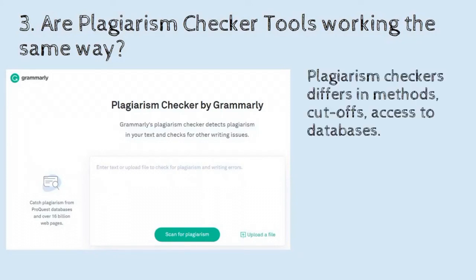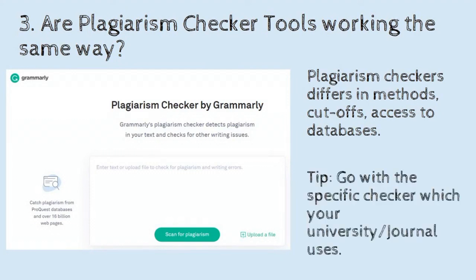Are plagiarism checker tools all working the same way? Plagiarism checkers differ in their methods for screening plagiarism. Their cut-off values are different — some software allows up to 5%, some up to 10%, some even up to 25% — and access to databases will be limited. In general, online website-based plagiarism checkers are not as rigorous, but software tools you download will be more rigorous and will flag plagiarism more. The tip here is to go with the specific checker used by your university or journal.